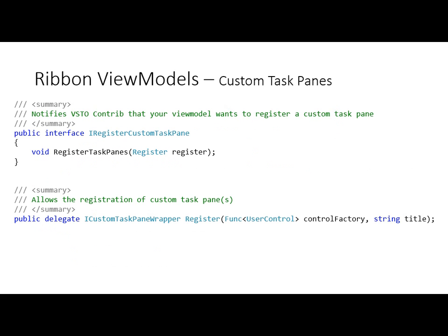The next interface is the iRegisterCustomTaskPane interface. It's got a single method with a single parameter — that parameter is a delegate. What this delegate does is every time you invoke it, it registers a custom task pane and gives you an iCustomTaskPane wrapper back. This is an abstraction over the custom task panes that allows you to set visibility and other things. If I set the visibility to false, no matter how many windows I have open, it'll automatically set the visibility to false on all of the custom task panes for all windows for that document. It gives you a really nice clean model to work with.